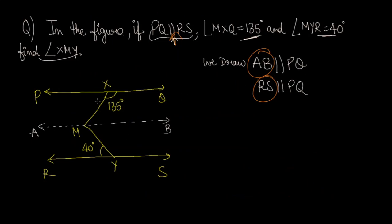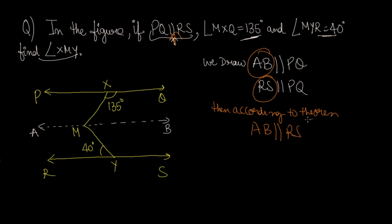So these two lines, AB and RS, are both parallel to the same line PQ. According to the theorem, AB is parallel to RS. We have now applied the theorem we studied and proved it. AB is PQ-parallel and RS is PQ-parallel, so AB and RS are parallel to the same line.